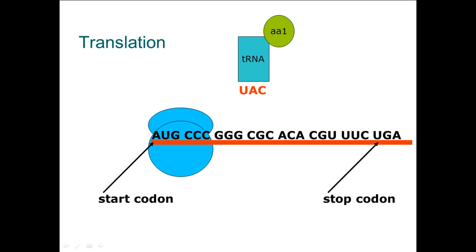At either end of the mRNA code, there is a start codon and a stop codon. The start codon tells the ribosome where to start reading from, and the stop codon indicates where it needs to stop. It is also the end of the code for the protein.